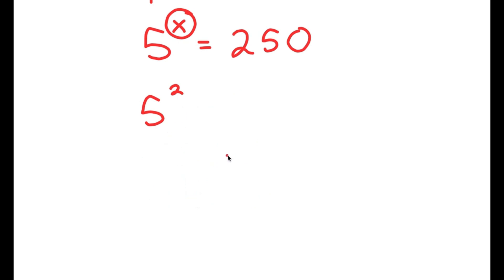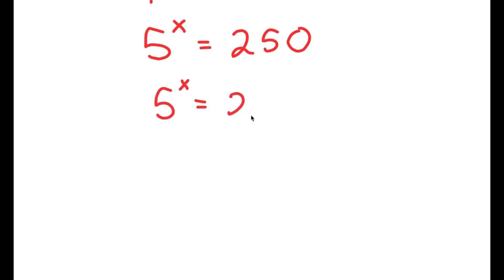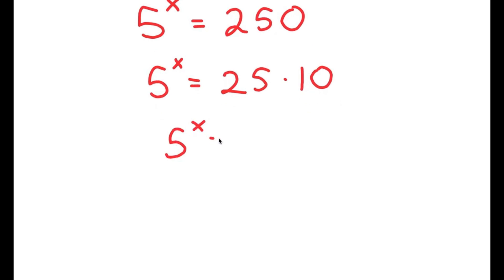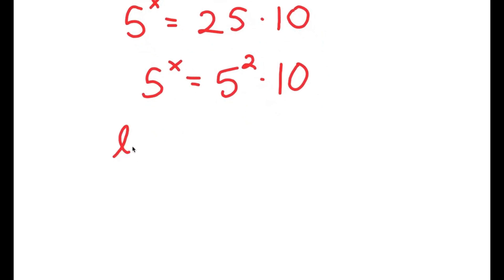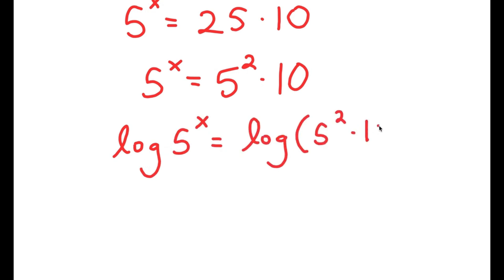Now, to actually find the exact value of x — not just an estimate — what we're going to do is rewrite 250 as 25 times 10. And the reason I did this is because 25 is the same thing as 5 squared, so I get 5 squared times 10. And now I'm going to take the log on both sides, so I get log of 5 to the power of x is equal to log of 5 squared times 10.